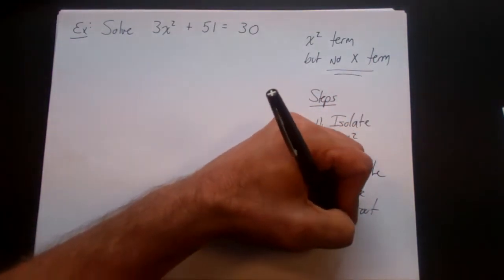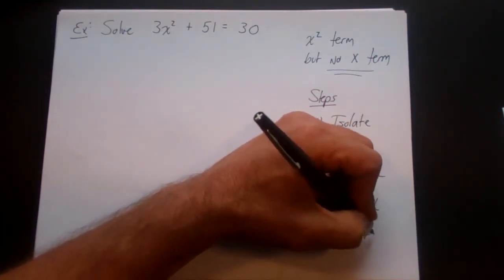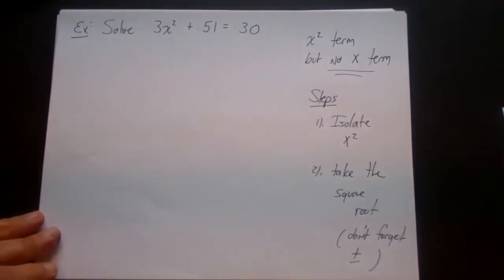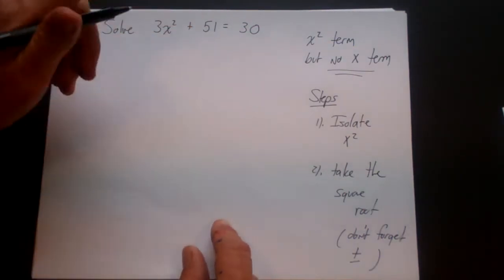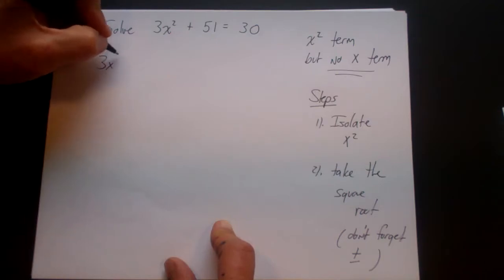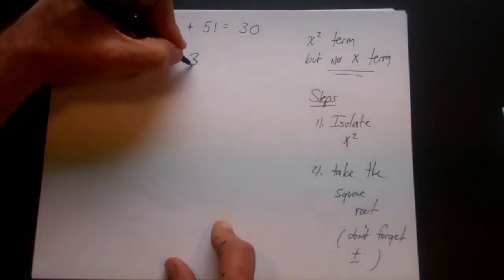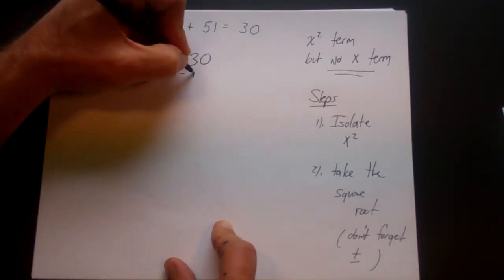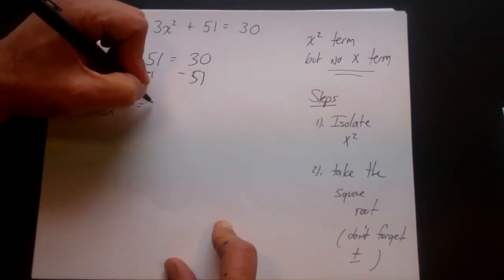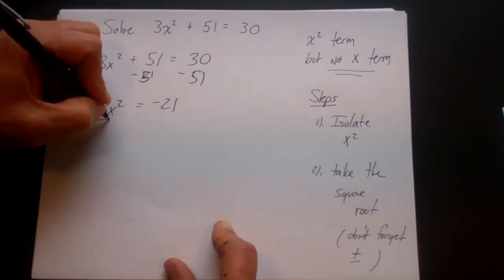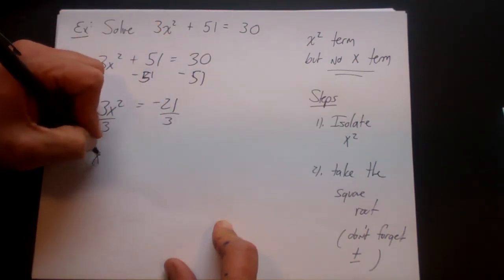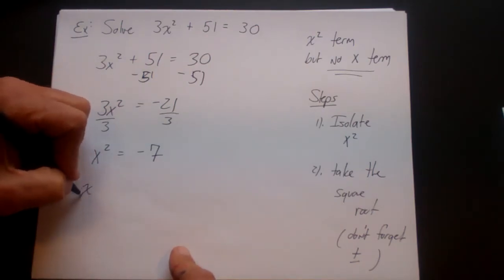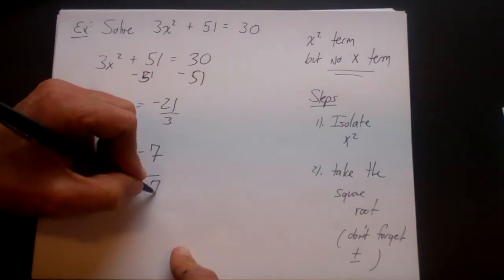Remember: don't forget your plus or minus — whenever you take the square root of both sides, you always include plus or minus. So for the first problem, solve 3x squared plus 51 equals 30. I'm going to subtract 51 from both sides to get 3x squared equals negative 21. Then I divide by 3 to get x squared equals negative 7. Now I take the square root of both sides, so x equals plus or minus the square root of negative 7.